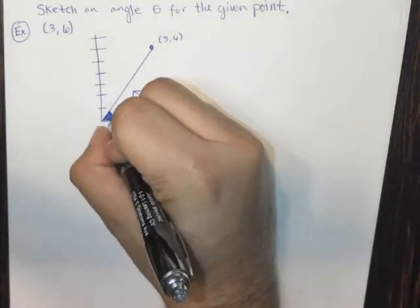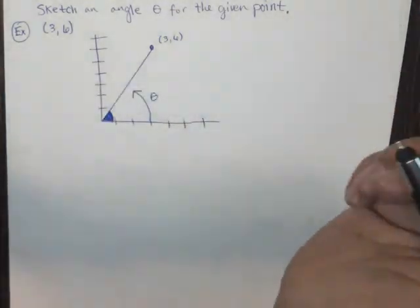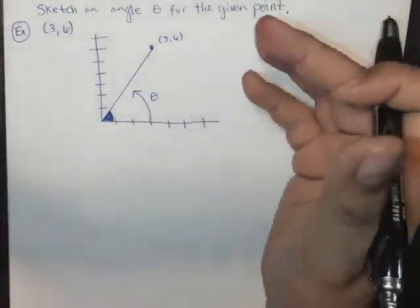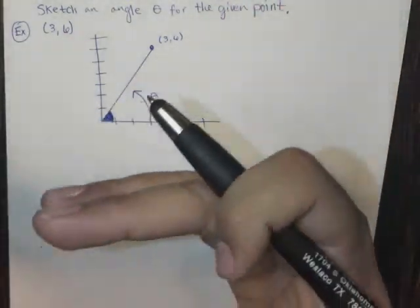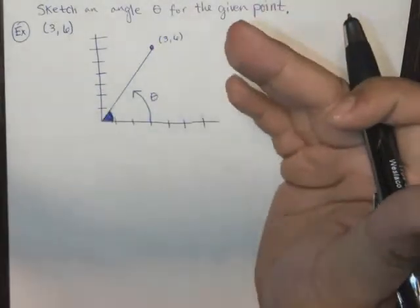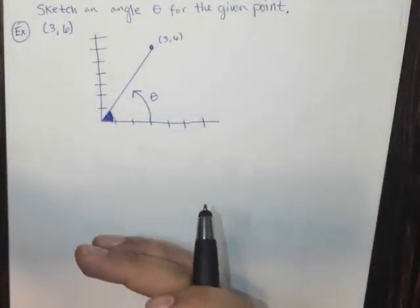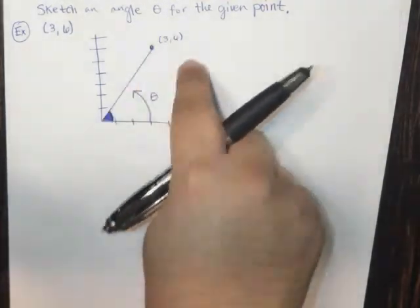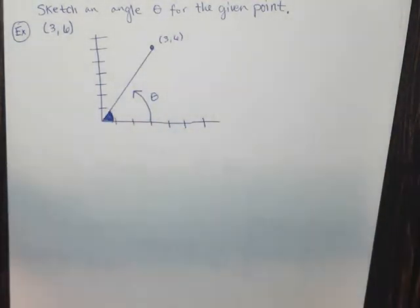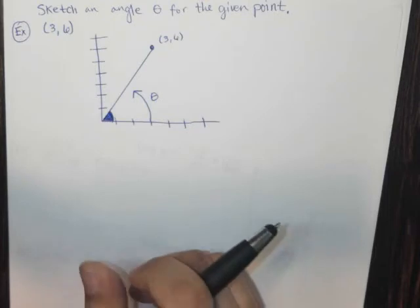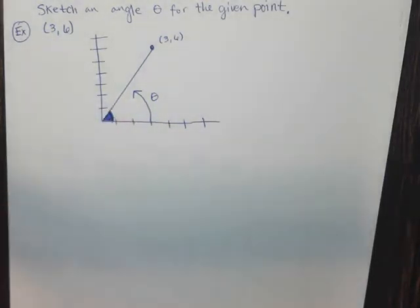Now we're not going to measure the angle per se, but there is a way to measure it. But this is just a way to sketch it. Because what we're going to do in the next few examples is actually figure out the trigonometric ratios associated with something like this. So that's another video. That's actually the next video. But otherwise, this is a really simple problem to work with.